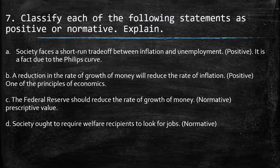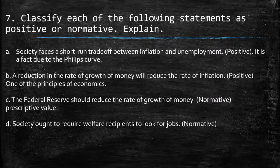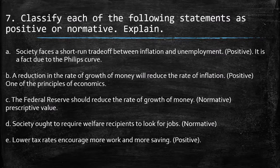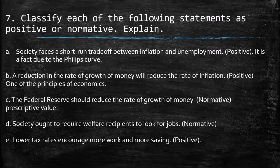Fourth — society ought to require welfare recipients to look for jobs. This is normative — 'ought to' expresses a subjective position. Fifth — lower tax rates encourage more work and more savings. This is positive. Data shows that when tax rates are lower, people have more disposable income, which can encourage more work and savings. It is a factual, data-supported argument.